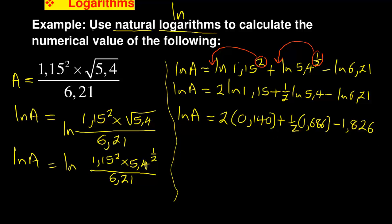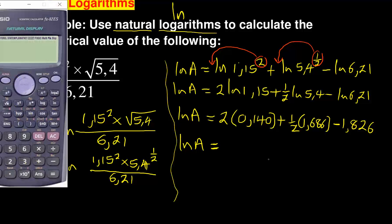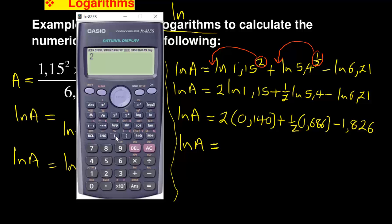They said use natural logarithm to calculate the numerical value. ln A equals - the next part is to find the final answer on your right hand side, which is 2 times 0.140 plus 1/2 times 1.686 minus 1.826. Most questions want you to show the working, so don't just find the final answer without showing these steps or you might lose marks.